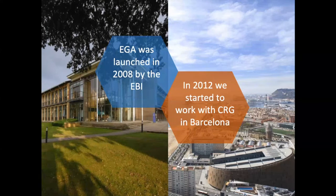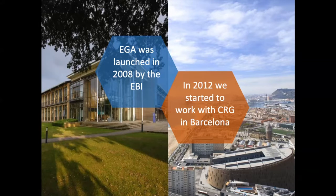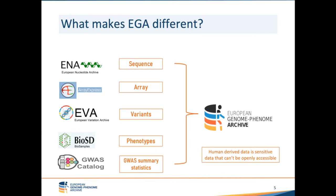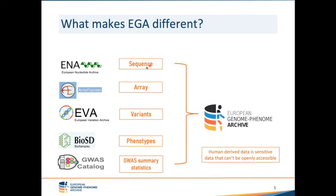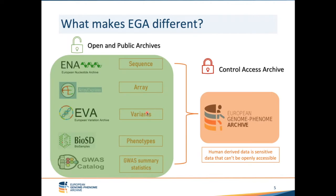EGA was launched in 2008 by EBI, and since 2012 has worked in collaboration with CRG in Barcelona. EMBL-EBI has different archiving services — for example, ENA is for sequence data, ArrayExpress for array data — but what makes EGA different is that all those other archives are open and public, whereas EGA is a controlled-access archive.